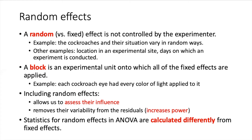but which we cannot control. One of the ways for dealing with this source of uncontrollable variation is to create an experimental unit called a block. A block is basically a blocked off area or a blocked off compartment, and each of the fixed effects is tried on that particular experimental unit. In the example of the cockroach experiment, each cockroach eye had every color of light applied to it.